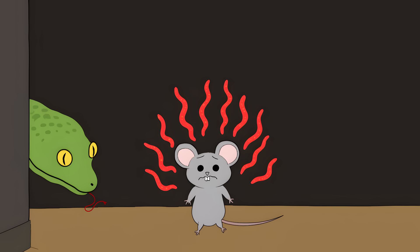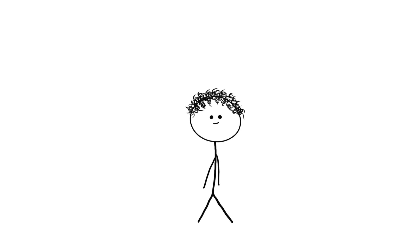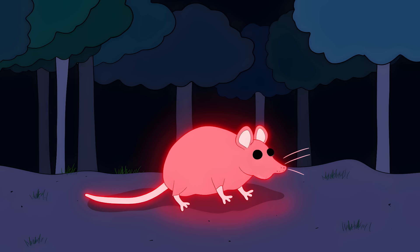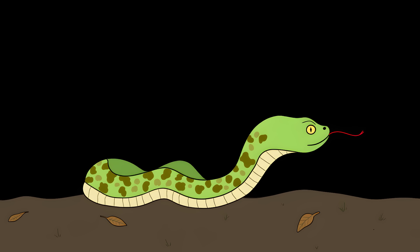Number 8: A snake's thermal vision. A pit viper slithers through the darkness, and suddenly it can see the heat coming off a mouse's body like it's glowing neon red. This isn't science fiction. It's Tuesday night for a pit viper.